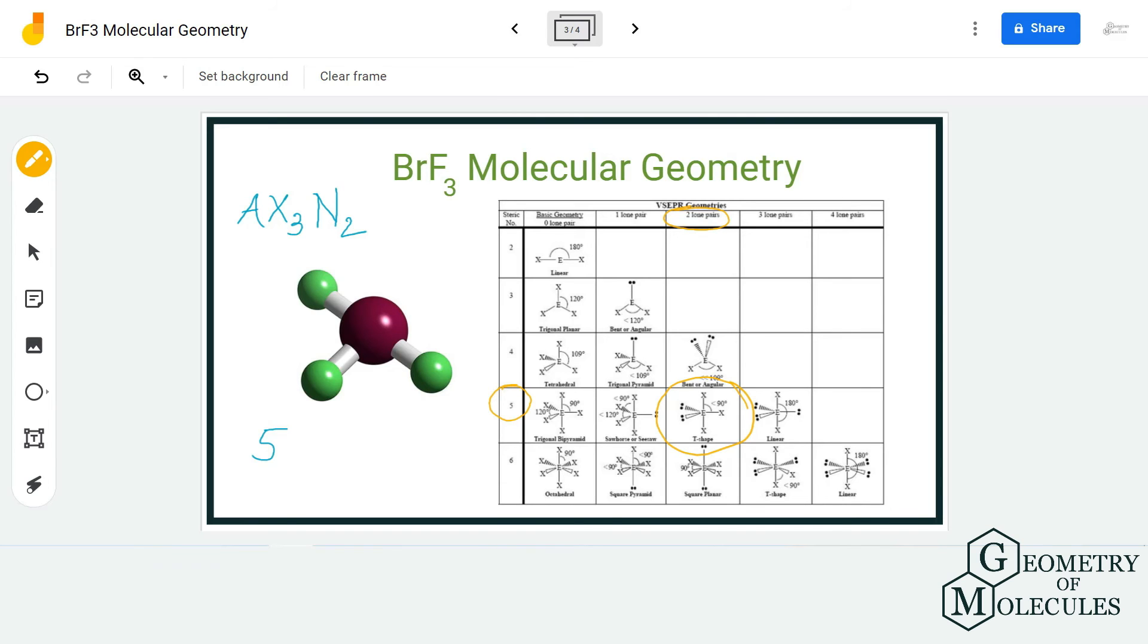You can probably see it over here. Now these bond angles are less than 90 degrees. They are not exactly 90 degrees, but somewhere around 86 or 88 degrees. But yes, the molecular geometry of BrF3 molecule is T-shaped, and you can probably determine that just by looking at this molecule's shape in 3D.